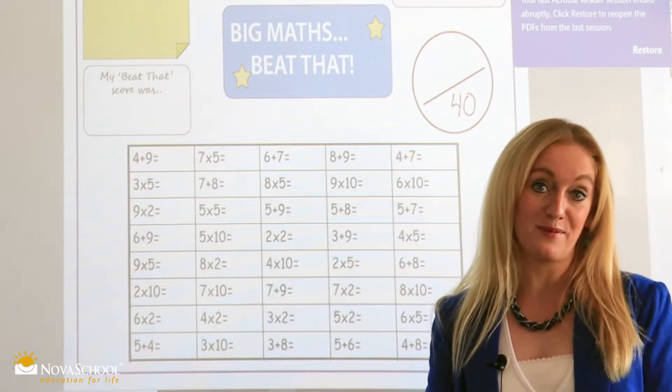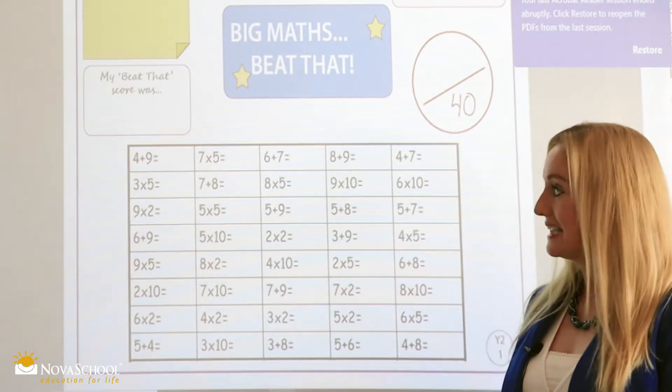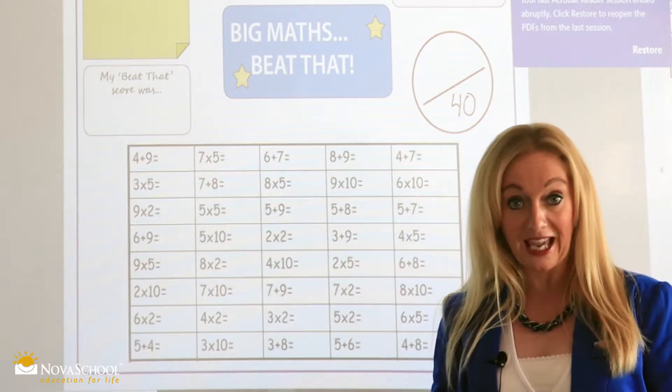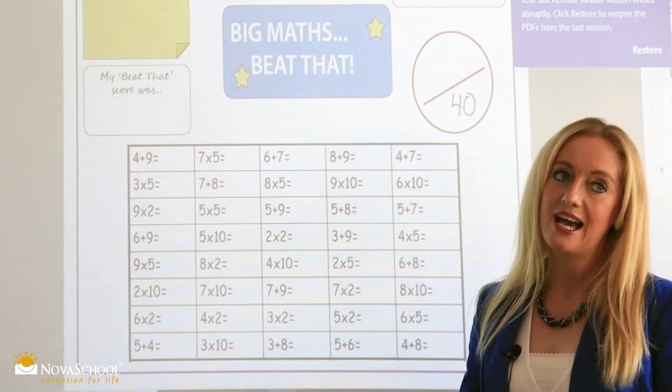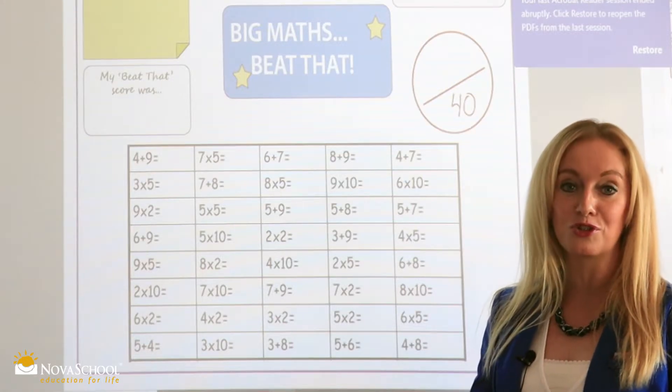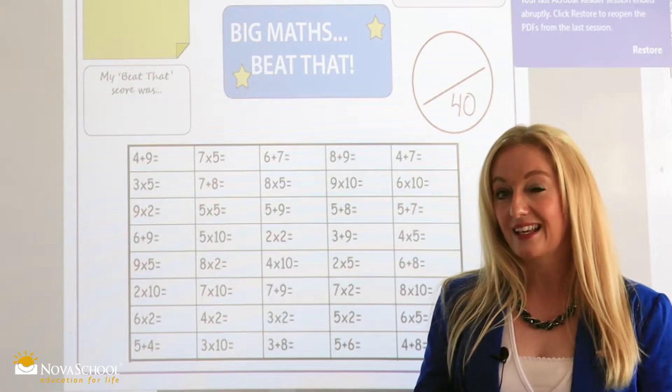We have two different types of Big Maths. We have the speedy, which is what we're looking at now. The speedy number beat that, additions and multiplications. And we also have the clicks, which we have ten questions, where we ask the children to use different methods to answer the calculations.